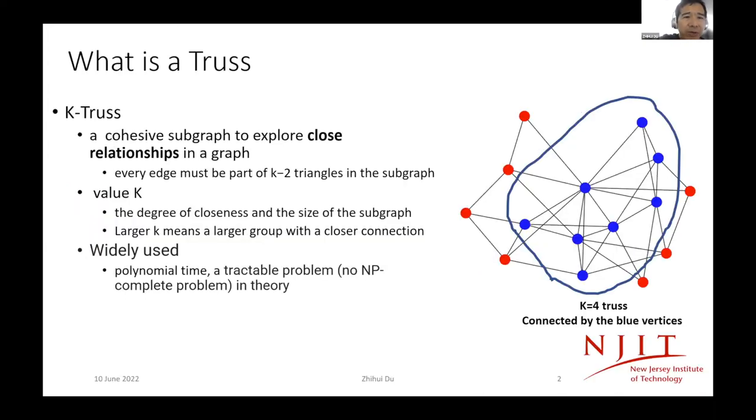First, what is a truss? A truss is a subgraph used to show the close relationship of some members in a graph. A very important requirement is that for every edge in the subgraph, it must be a part of K-2 triangles. This is a major requirement of a K-truss subgraph. The value of K shows the degree of closeness of the members in the subgraph, and it also shows the size of the subgraph.